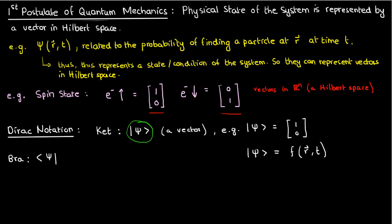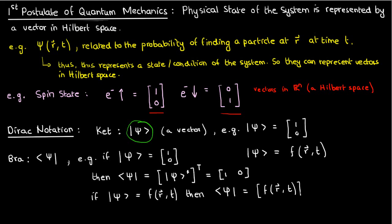Anyway, the bra can be thought of as some kind of conjugate of the ket vector. For instance, if our ket vector was a spin-up vector, its bra would be the conjugate transpose of the ket vector, which would again be [1, 0] but now is a row vector instead of a column vector. If our ket vector was a function, the corresponding bra vector is just the complex conjugate of that function.